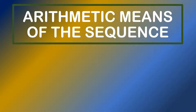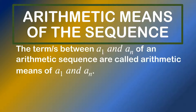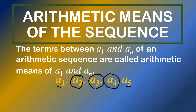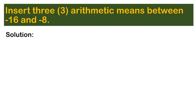Hi everyone! In today's video, you will learn how to solve some problems involving the arithmetic means of the arithmetic sequence. When we say arithmetic means, we are actually referring to the terms between the first term and the last term — between a sub 1 and a sub n. For example, in the sequence a sub 1, a sub 2, a sub 3, a sub 4, and a sub 5, the arithmetic means are the terms between a sub 1 and a sub 5.